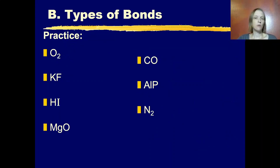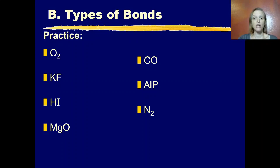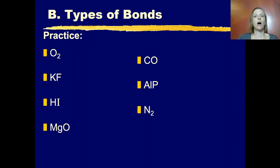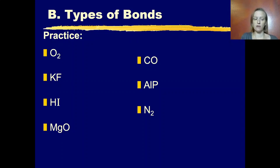Normally I won't give you electronegativity values, so you just have to base your ideas off of where elements are on the periodic table. Here are some compounds where you should predict whether they are ionically bonded, covalently bonded, and if covalent, whether they are polar covalent or nonpolar covalent. Pause the video and give it a try.